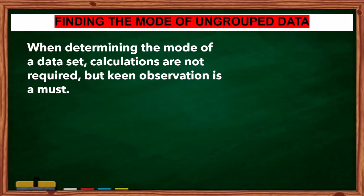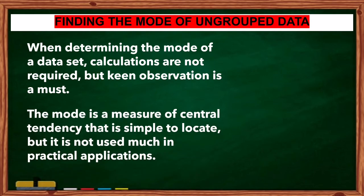Let us try to find the mode of ungrouped data. Here are the following examples. When determining the mode of a dataset, calculations are not required, but keen observation is a must. The mode is a measure of central tendency that is simple to locate, but it is not used much in practical applications.